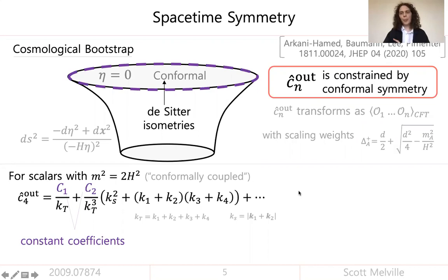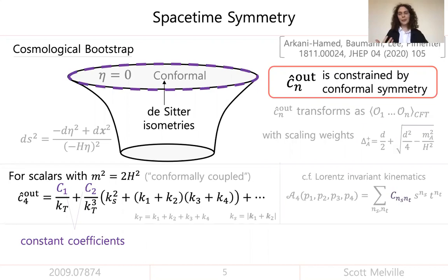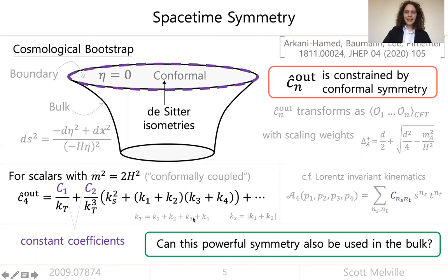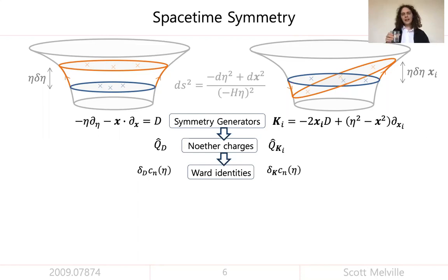This is analogous to what happens on flat space with a scattering amplitude — you know that a Lorentz-invariant four-particle amplitude depends only on the Mandelstam variables s and t, so you can expand the amplitude in terms of constant coefficients times the allowed kinematic structures. The first question we want to answer is: can this powerful symmetry also be used in the bulk — meaning some eta which is not zero, as opposed to the boundary where eta is zero?